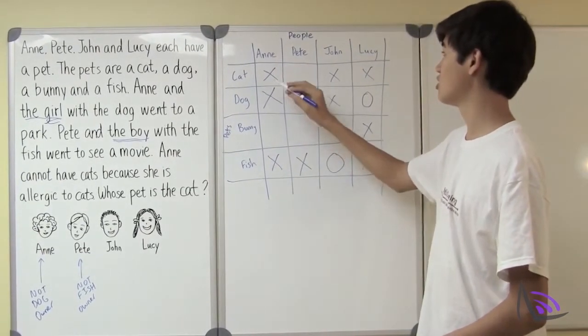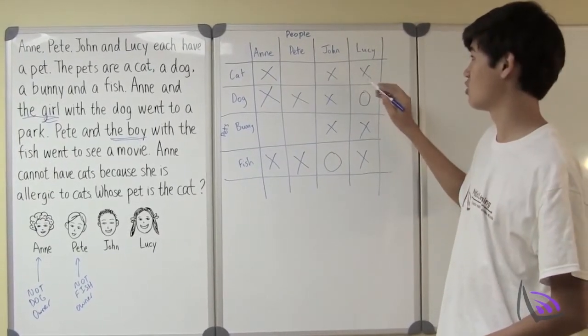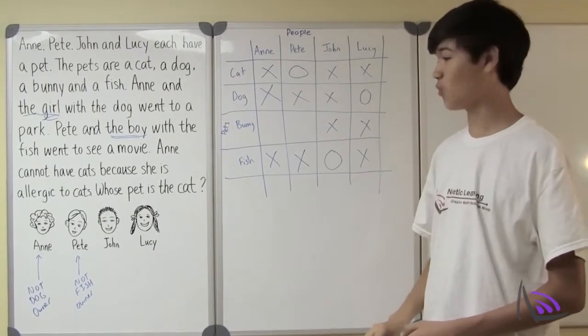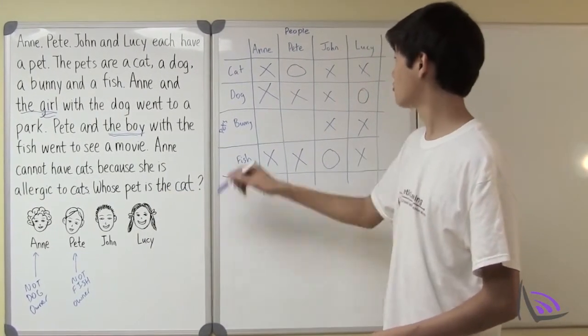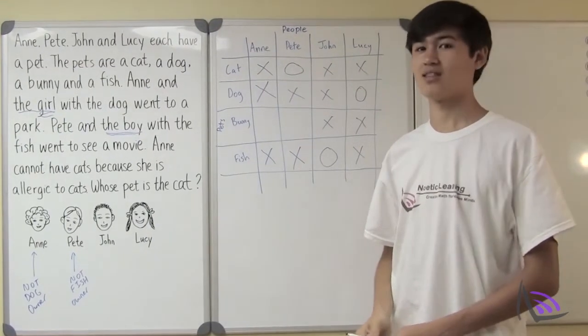So Ann cannot have cats, John cannot have cats, and Lucy cannot have cats. Which means Pete must have cats. And when we look at the question, whose pet is the cat? From the table we can learn that Pete is the owner of the cat. And that's your answer.